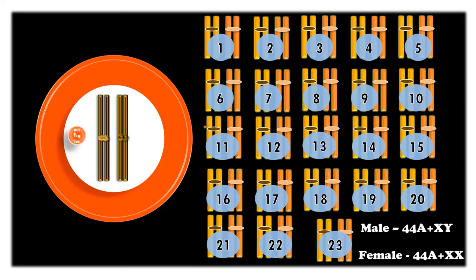This is the diploid number of chromosomes present inside the somatic cells. As we know, we received 23 pairs of chromosomes from either parent — 23 from father and 23 from mother. So the genetic constitution for male is 44 autosomes plus XY, whereas the genetic constitution for female is 44 autosomes plus XX. We know this very well.